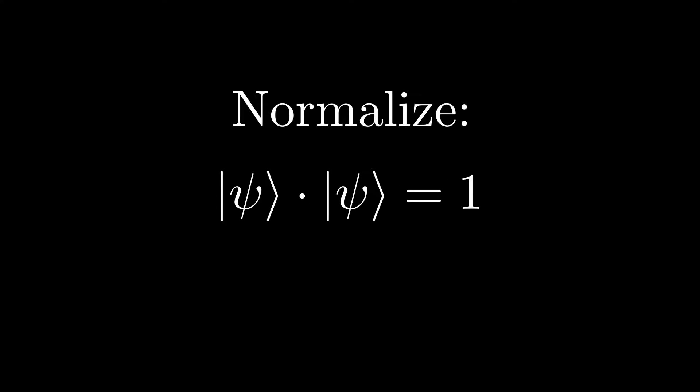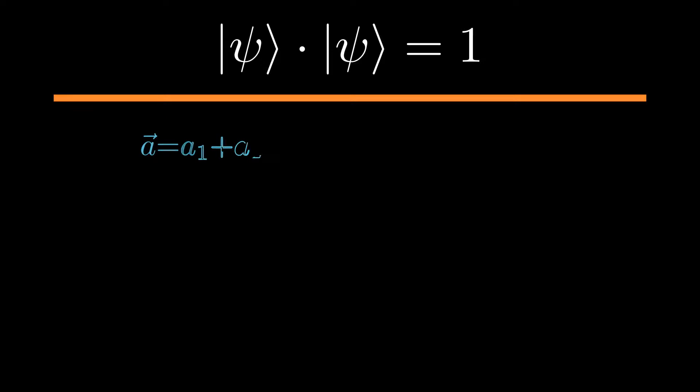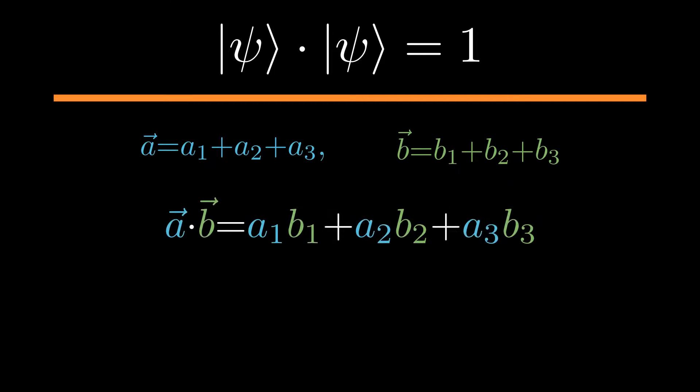You might be familiar with the dot product from linear algebra, where if we have two vectors a and b, the dot product a times b is given by multiplying all vector components of a with the corresponding vector components of b like this. The same is true for vectors in Hilbert space.